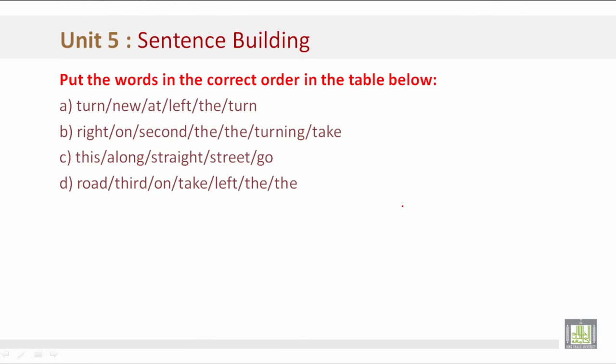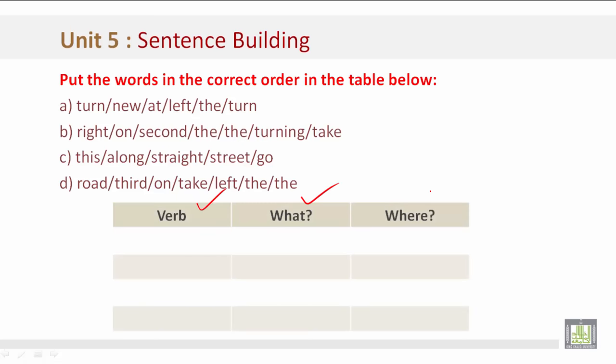Put the words in the correct order in the table below. Here we have examples A, B, C, and D. Let's begin. We have verb, what, and where. Remember, each sentence will fall into these three categories and in that order.